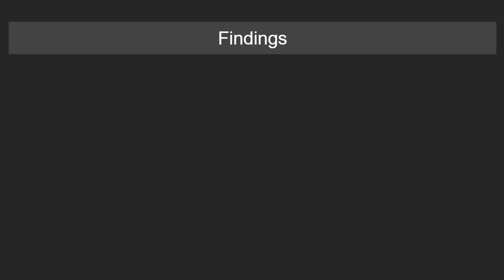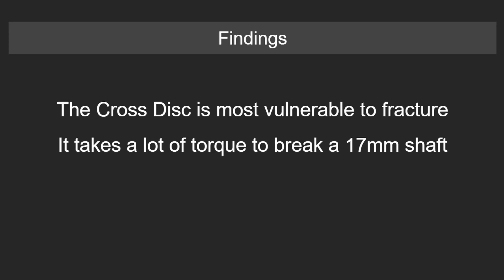So what did we learn from all these calculations? Well, just from running the numbers, we found that the cross disc is the most vulnerable part in the pump. It's not necessarily the weakest, you just need to have considerably better material properties in it in order to match the strength of even the 17mm pump. So it is the most vulnerable to failure. Also, we found that it actually takes quite a lot of torque to break a 17mm shaft. 178 foot-pounds is nothing to sneeze at. And one of the big things I wanted to prove here is that these 17mm pumps are likely not the ticking time bomb that they are made out to be.